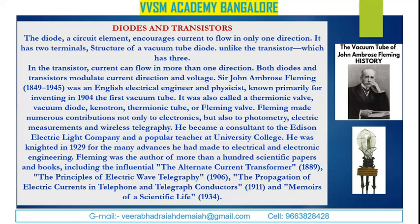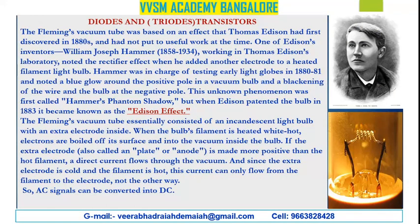Fleming made numerous contributions not only to electronics but also to photometry, electric measurements, and wireless telegraphy. He became a consultant to the Edison Electric Light Company and a popular teacher at University College. He was knighted in 1929 for his many advances in electrical and electronic engineering. Fleming was the author of more than 100 scientific papers and books, including 'The Alternative Current Transformer' in 1889, 'The Principles of Electric Wave Telegraphy' in 1906, and 'The Propagation of Electric Currents in Telephone and Telegraph Conductors' in 1911.